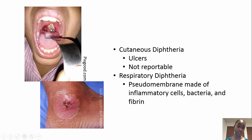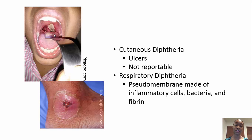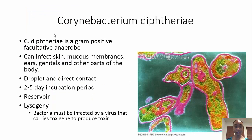As you can see on this child's throat, there's a pseudomembrane right there. It's made of inflammatory cells, bacteria, and fibrin.